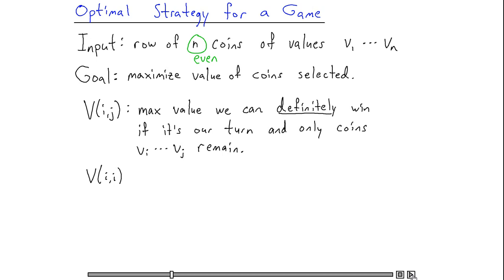As base cases, we're going to compute V(i,i) and V(i, i+1) for all values of i, and these are going to be easy to compute. We'll then proceed to compute V(i, i+2) for all values of i, then V(i, i+3) for all values of i, and so on. This is the order in which we're going to compute solutions to subproblems.